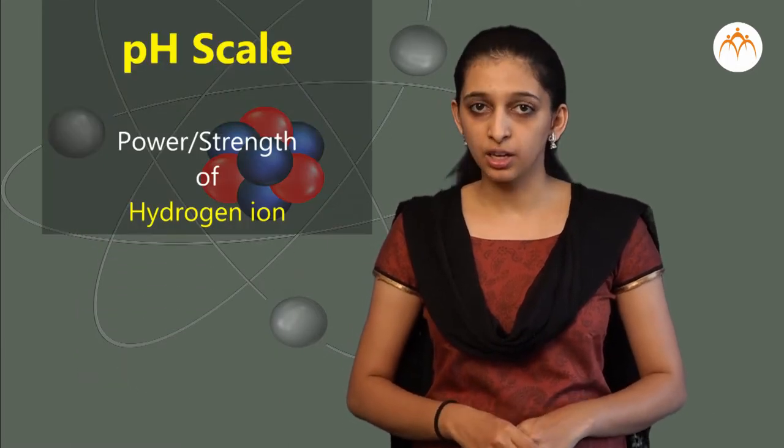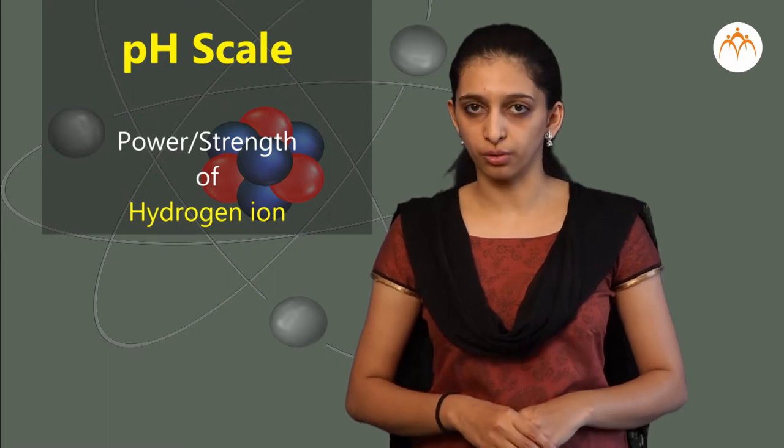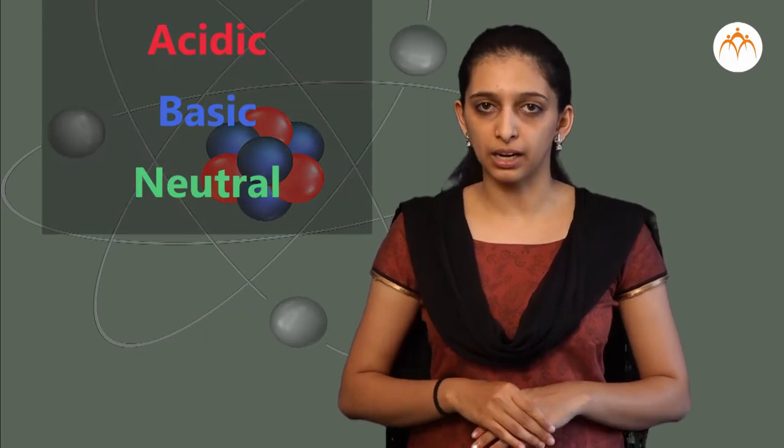Scientist Sorensen introduced a new scale to measure H+ ion concentration and it is called pH scale, that is power or strength of hydrogen. By using that scale we can classify the substances into acidic, basic, or neutral category.